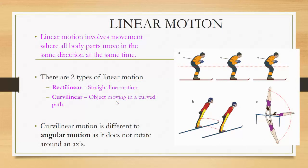There are two types of linear motion: rectilinear, which is straight-line motion, and curvilinear, which is an object moving on a curved path. Curvilinear motion is different to angular motion as it does not rotate around an axis. For example, a skier moving in a straight line is rectilinear — all of their body moving in the same direction. Curvilinear motion shows a curved path, while angular motion is like a gymnast rotating around the high bar, with that bar being the central axis.